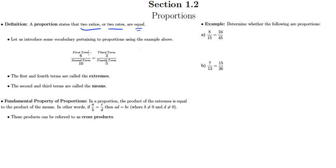So what we're going to do is we're going to call the upper left the first term, the lower left the second term, the upper right the third term, and the lower right the fourth term. And there's really nothing special about the way we named these. It's just so that we can identify the different parts of our proportion.